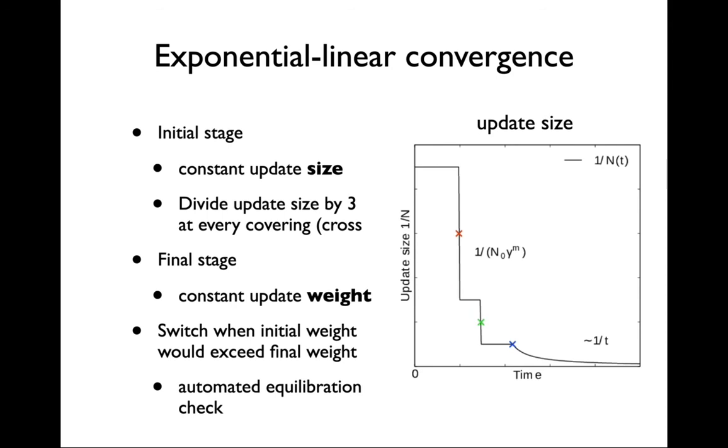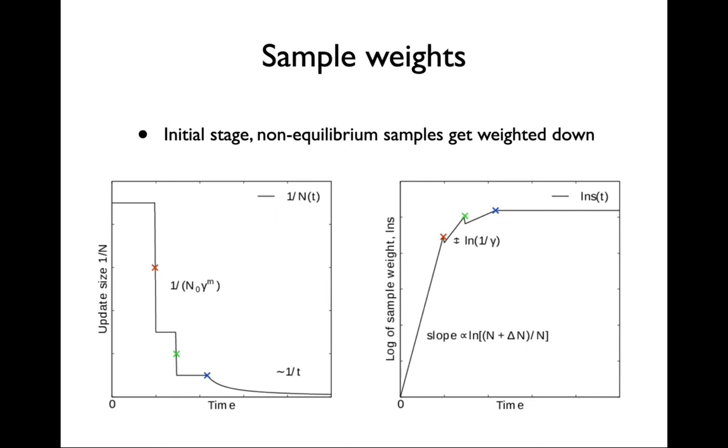There's this update size. Here you can see how the update size in a simple toy example goes down initially exponentially and then later goes as one over t, and the weights need to be updated consistently with this. Initially the weight is fixed. The weights go up initially but these initial weights get weighted out exponentially because of the exponential initial phase, so you get in the end to a flat weight distribution as it should be that all samples are weighted equally. This provides very nice quick initial convergence and correct convergence at the end.